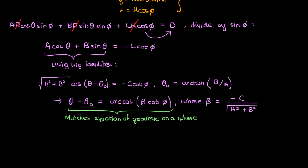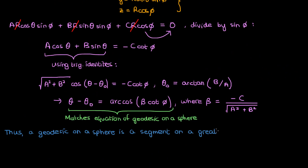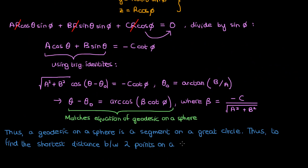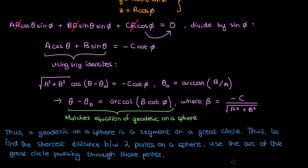What does that mean about the geodesic on a sphere? It means that the geodesic on a sphere is just a segment or arc on the great circle. If I wanted to find the path of shortest distance between two points on a sphere, I should use the segment or arc on the great circle connecting those two points. Hopefully all of this should be clear, but if you have any questions let me know in the comments. That should do it for the lecture.